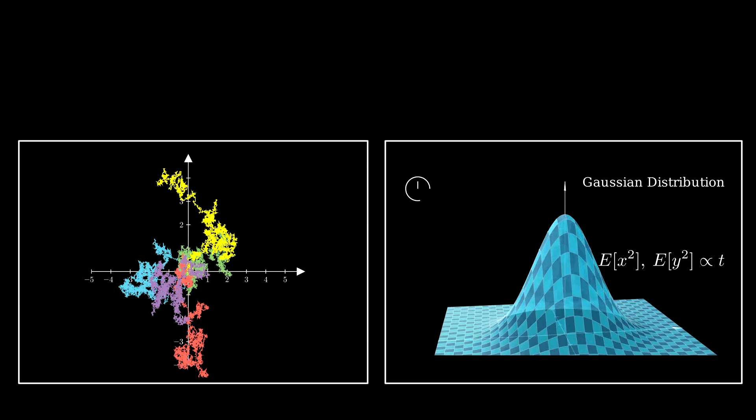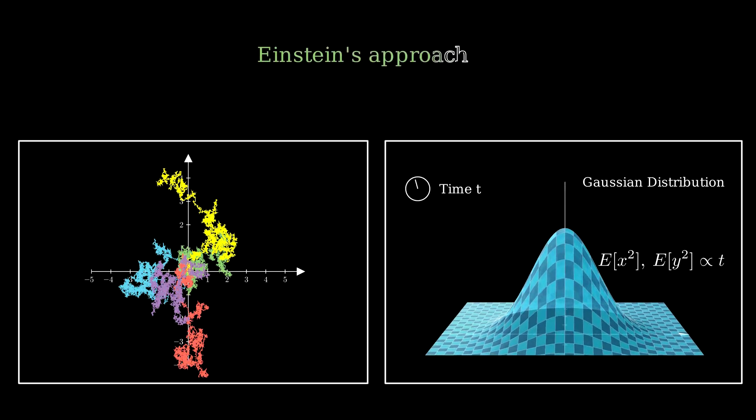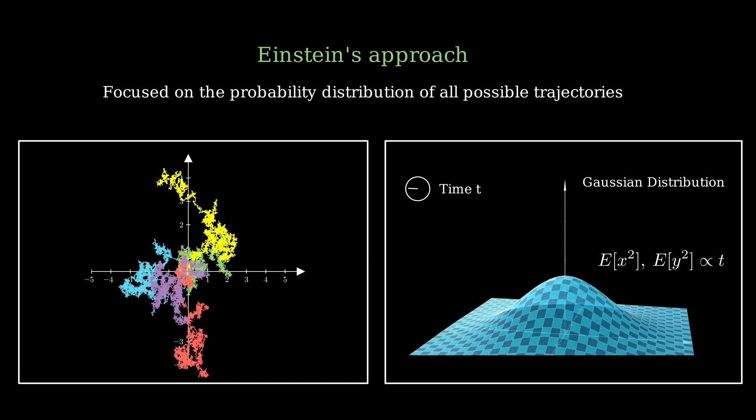On the other hand, Einstein focused not on the particular trajectory, but rather on the probability of that trajectory.